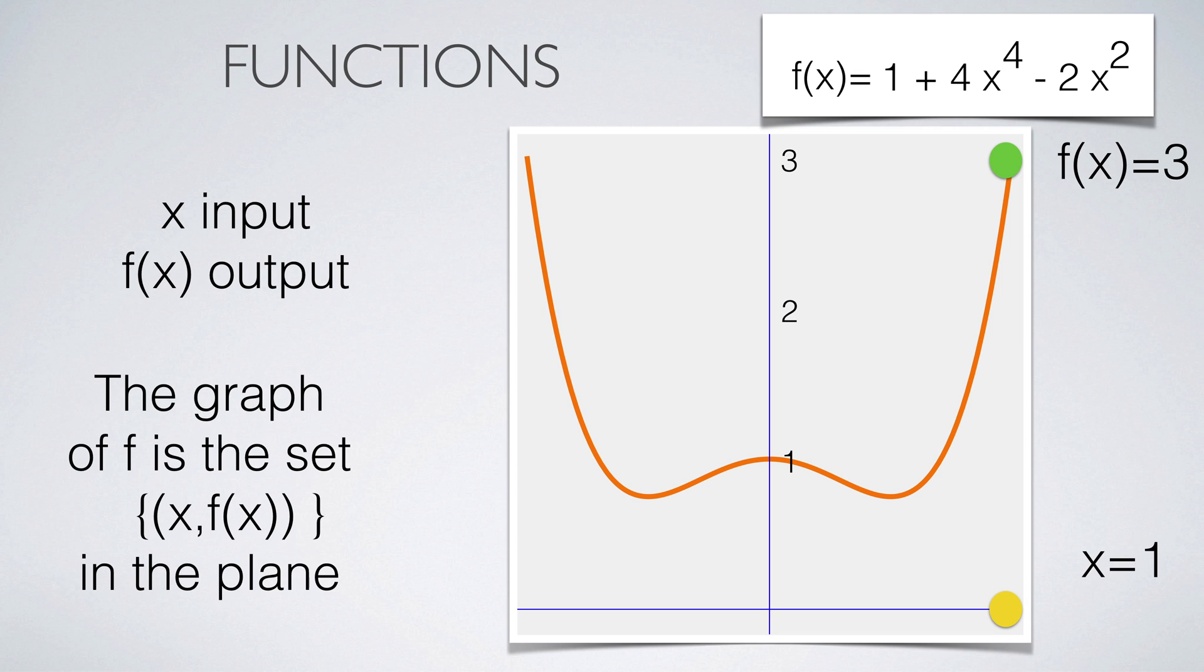A function is a rule which assigns to a real number a new real number. You see here an example of a polynomial. If we use the input x equals 1, then the output is f(x) equals 3. Functions can be visualized by their graph, which is obtained by plotting the pairs x and f(x).